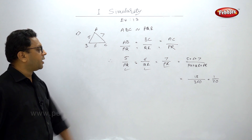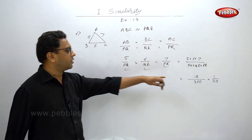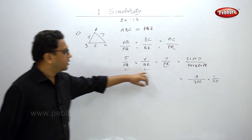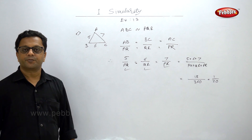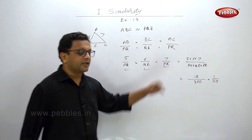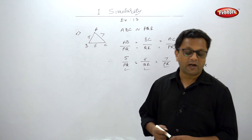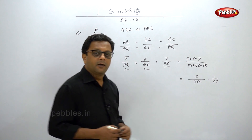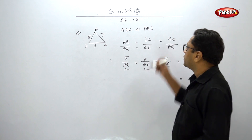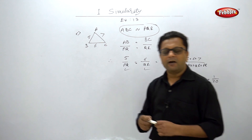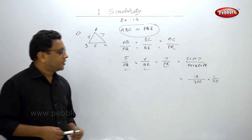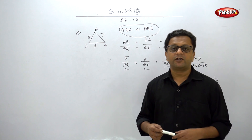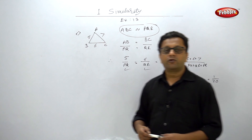So 18 upon 360 = 1 upon 20. Therefore 5 upon PQ = 1 upon 20, giving PQ = 100. Similarly, 6 upon QR = 1 upon 20 gives QR = 120, and 7 upon PR = 1 upon 20 gives PR = 140. Please pause and verify all three sides. With this, Exercise 1.3 is complete — only 6 examples. The key throughout is writing the names of similar triangles correctly; after that everything is easy. Thank you very much.